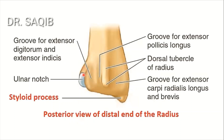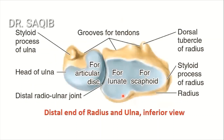Here you can see the ulnar notch of the lower end of the radius and the styloid process of the lower end of the radius. Here you can also see the scaphoid and lunate articular surfaces and the styloid process of the radius.